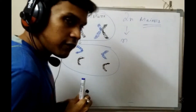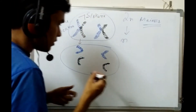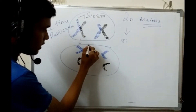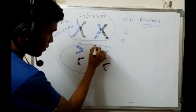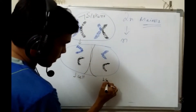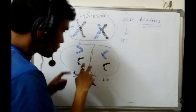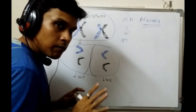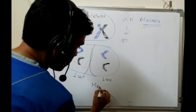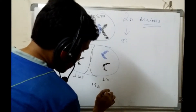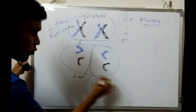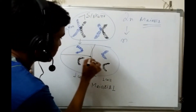In mitotic division, one cell produces just two cells and the diploid number is maintained. But during meiosis — meiotic division — this is called meiosis one. After meiosis one produces two cells, there is another cell division that occurs.